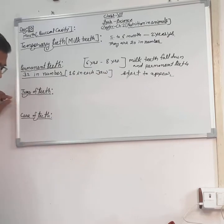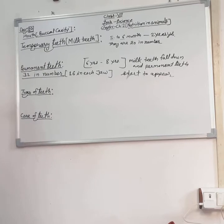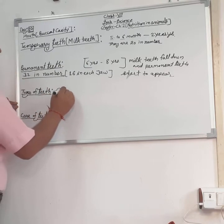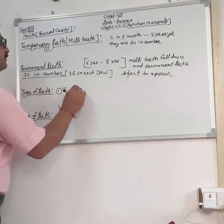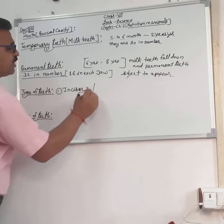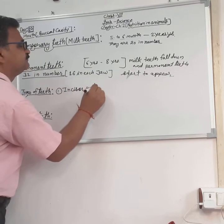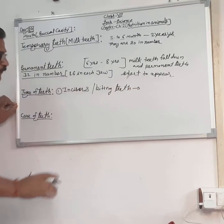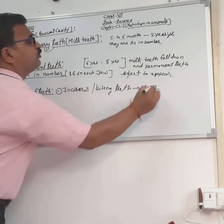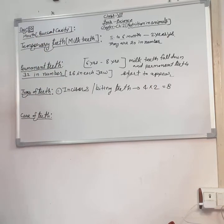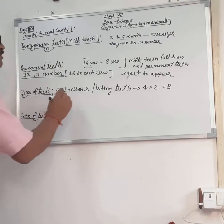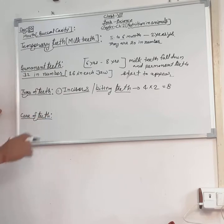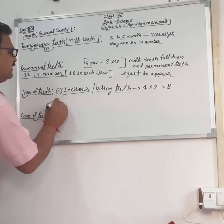Now we discuss the types of teeth. First number: incisor. Their other name is biting teeth. There are four in the upper jaw and four in the lower jaw, making eight in total. Their only function is to help in biting the food — incisors help in the incision of food.